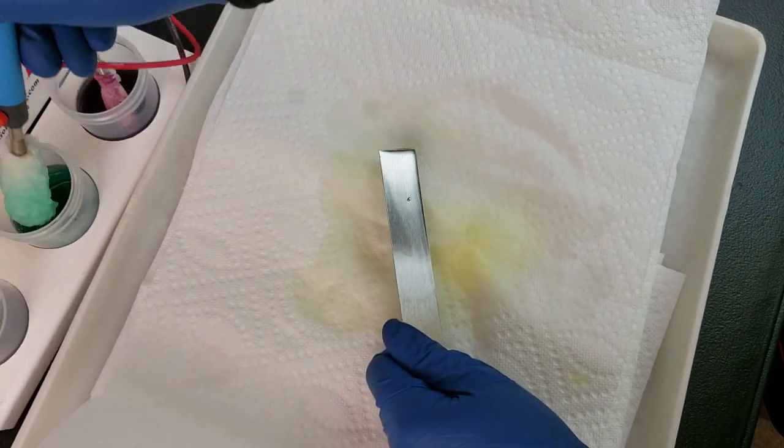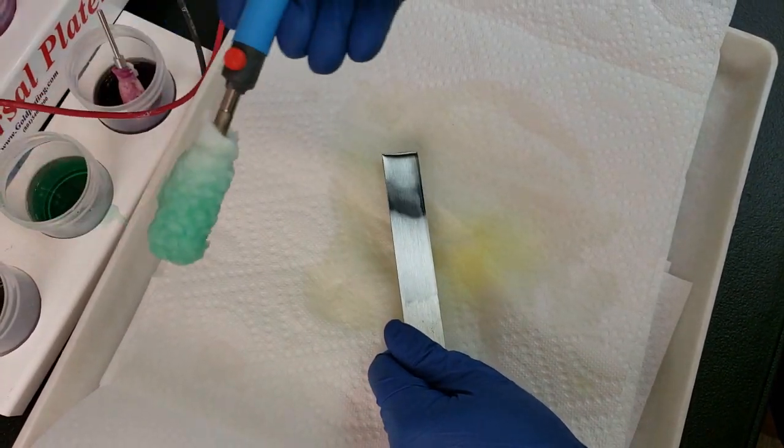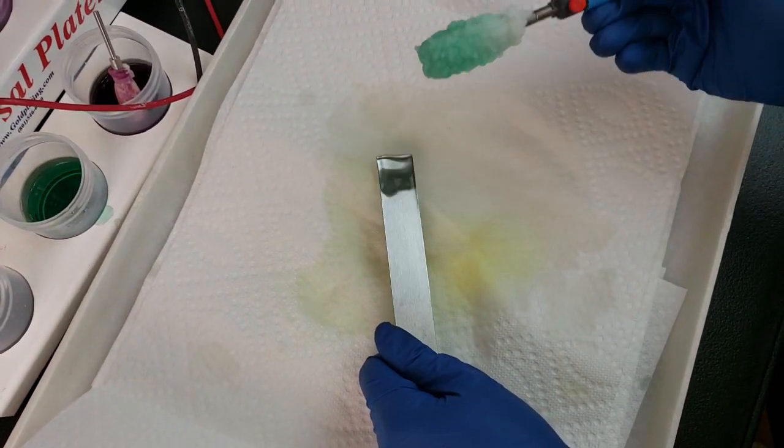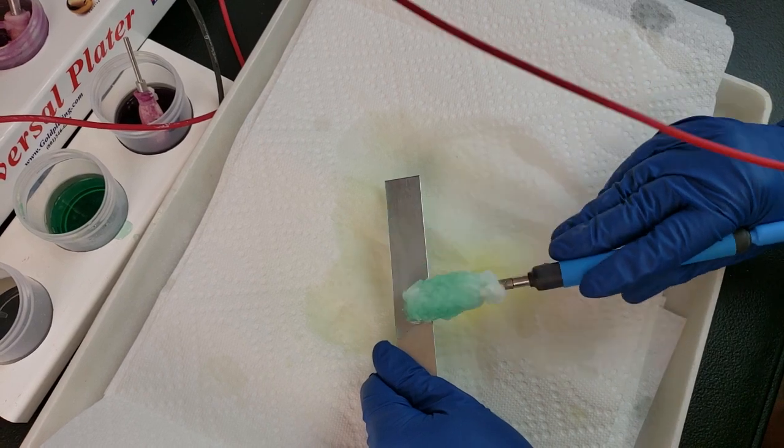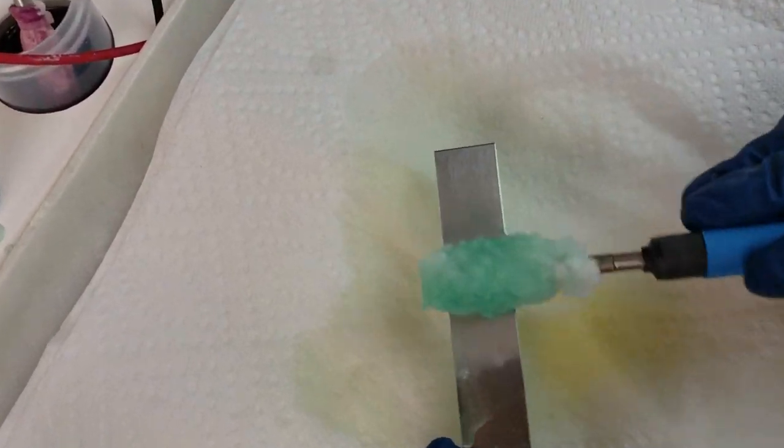Then you move on to the wood's nickel strike. You do the wood's nickel strike about the same as you do activator. Just quickly, a couple seconds per square inch, you can get everywhere.